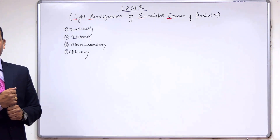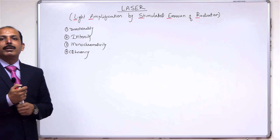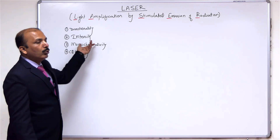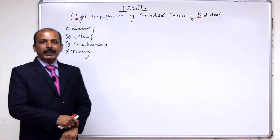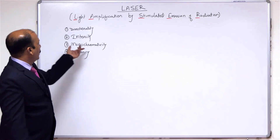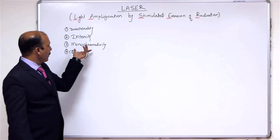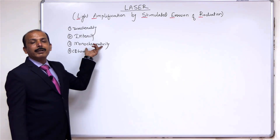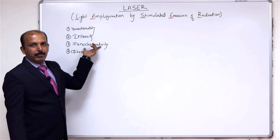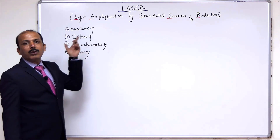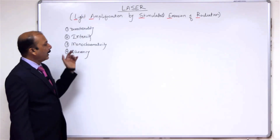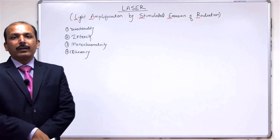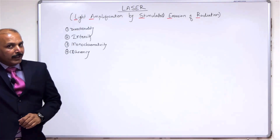Light emitted by laser is more monochromatic than an ordinary light source. For example, a sodium vapor lamp — an ordinary monochromatic source — gives two sodium lines at wavelengths 5890 and 5896 angstroms. But for a helium-neon laser, the wavelength we get is a single wavelength, 6328 angstroms. So laser is more monochromatic than an ordinary light source.